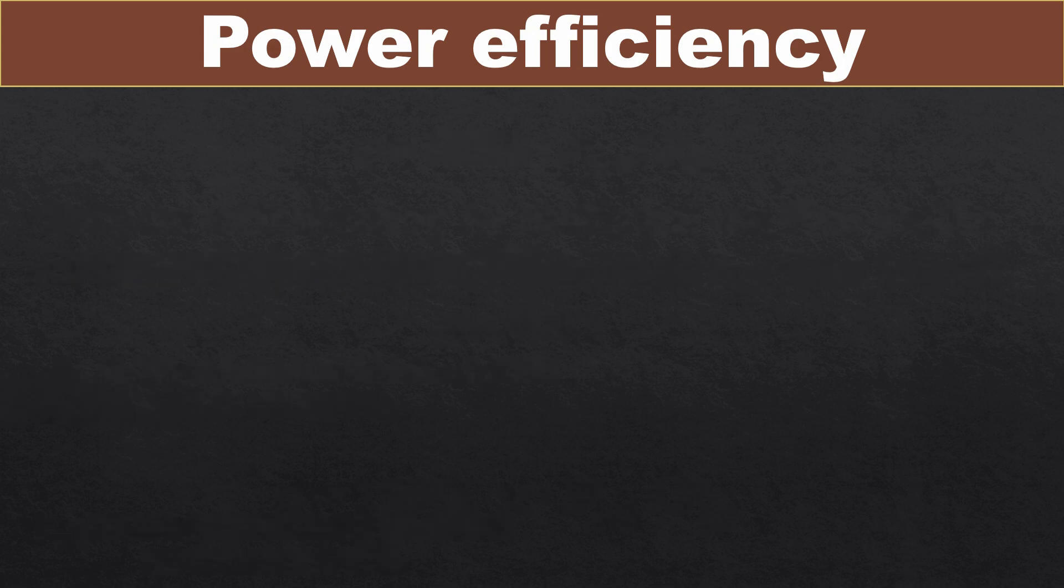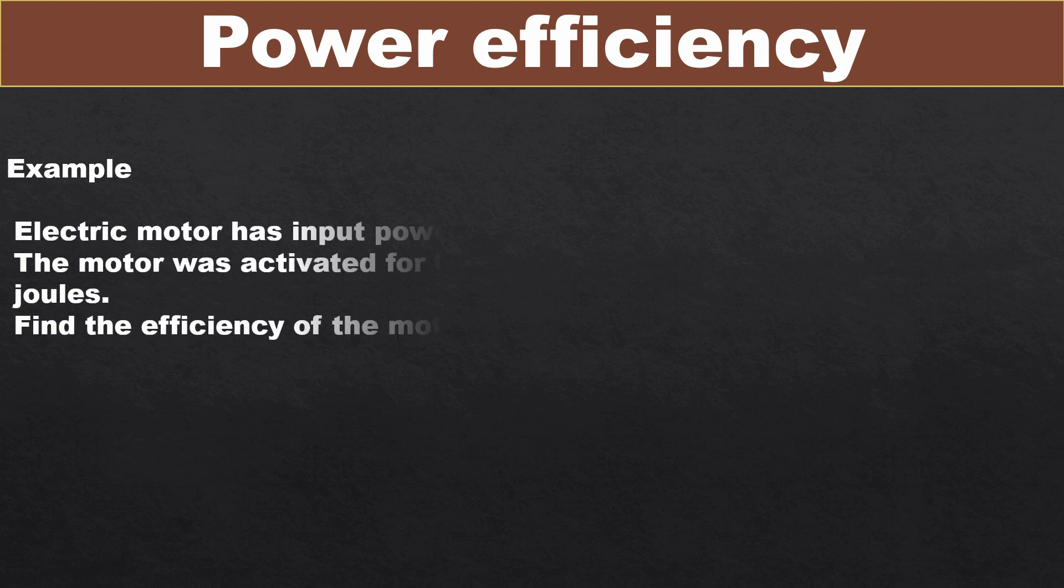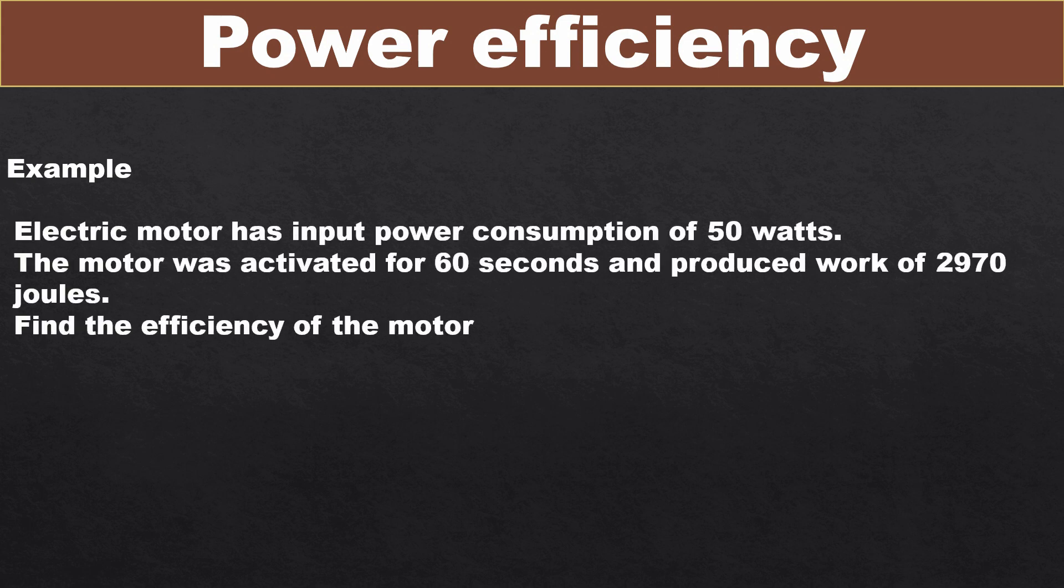For example, we have an electric motor with input power consumption of 50 watts. The motor was activated for 60 seconds and produced work of 2970 joules. Find the efficiency of the motor.